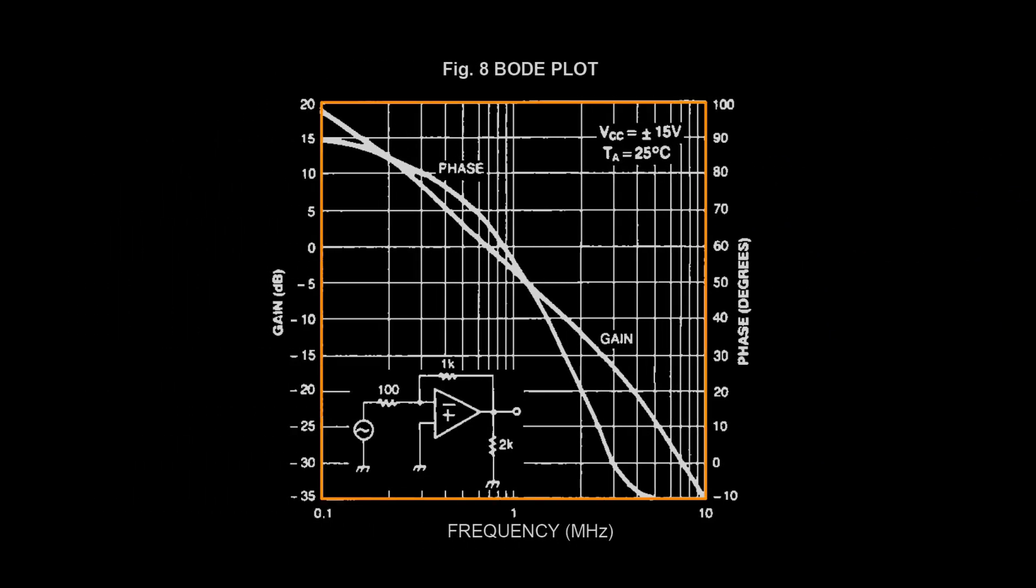Even though there's only one graph here, there's actually two sets of vertical axes. One for the phase, and one for the gain.